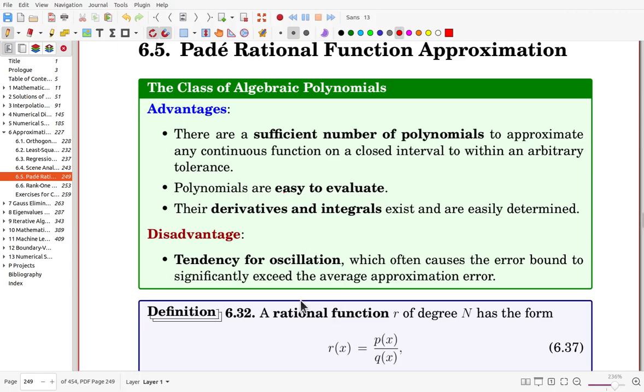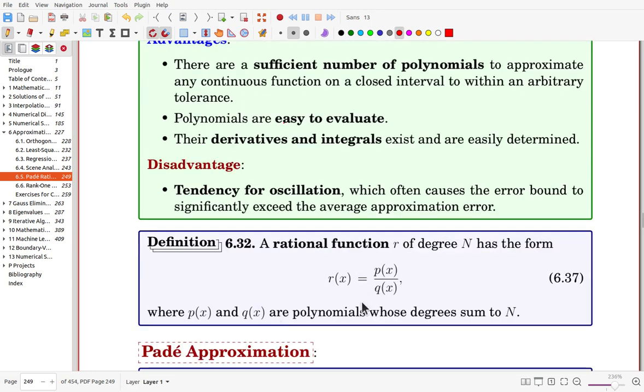Let's begin with the definition of rational functions. A rational function R of degree n has this form: a polynomial over a polynomial.